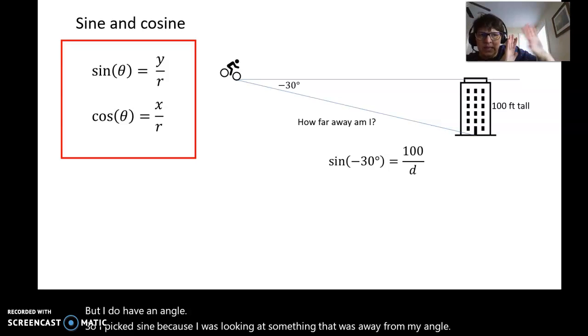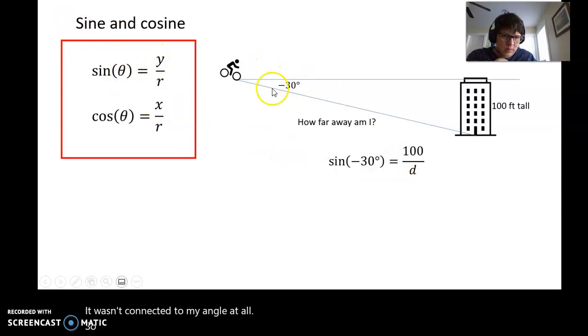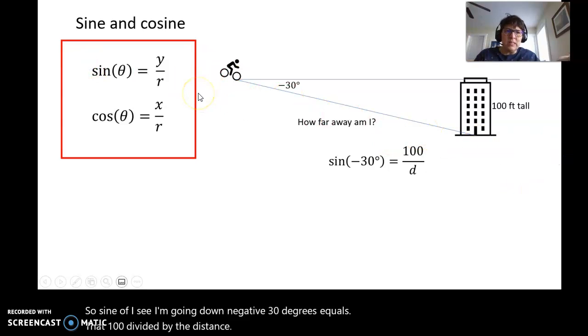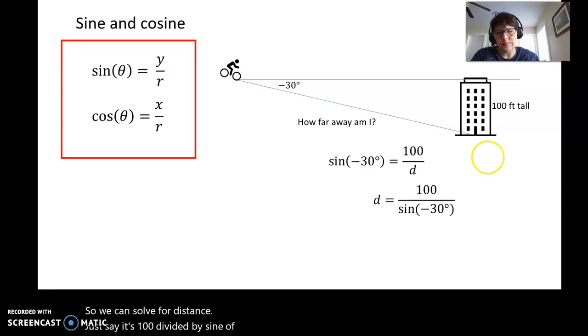So sine of, see I'm going down, negative 30 degrees equals that 100 divided by the distance. So we can solve for distance. Just say it's 100 divided by sine of negative 30 degrees. Let me pause and pull up the calculator.